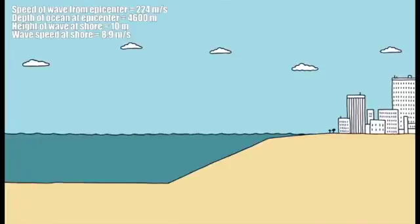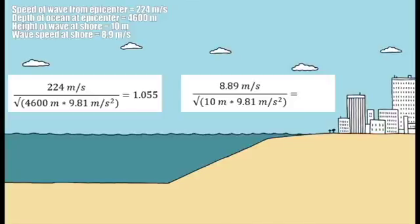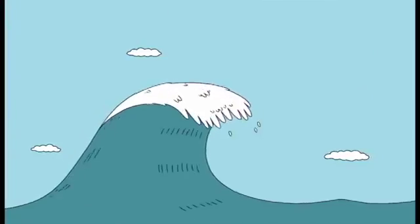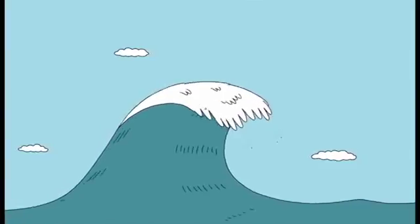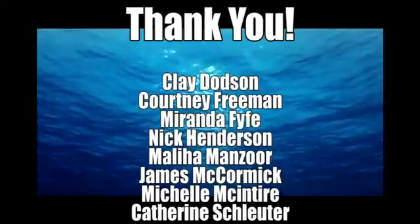So, if we apply this data in each case to Froude's Number, will we get a number close to 1 as we would expect? Let's find out. Plugging in our numbers, we find Froude's Number for the wave leaving the epicenter is almost exactly equal to 1, while closer to the shore it is slightly further from 1. We can attribute this difference most likely to energy loss as the wave approaches the shore. So, did we validate that Froude's Number for the Japan tsunami is nearly equal to 1? Yes, we did. Thank you for watching.